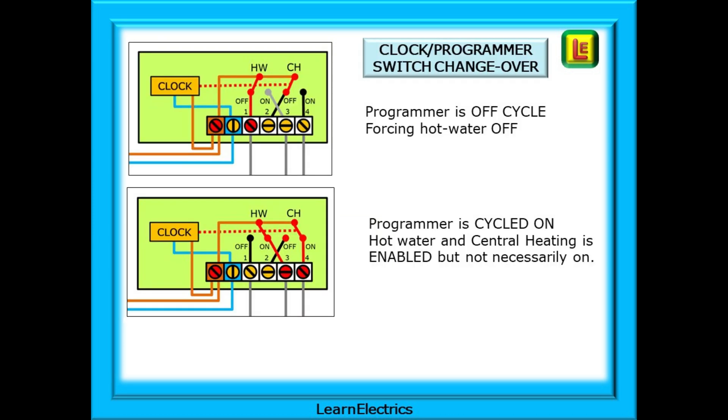The programmer timer and clock have changeover switches that allow us to set the on and off times for the hot water and central heating. In the off cycle periods, 240 volts is on programmer terminal number 1, forcing the hot water off. More on this soon. When the programmer is cycled on, the hot water and/or the central heating switches change over depending on how the programmer is set. This will enable the hot water and/or the central heating, but the boiler will not turn on until one or other of the thermostats calls for the boiler to be on.